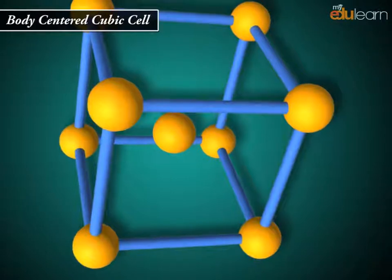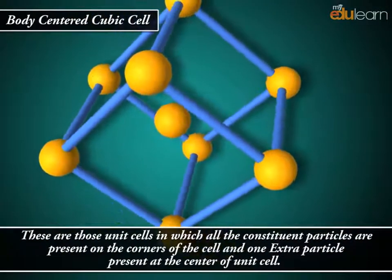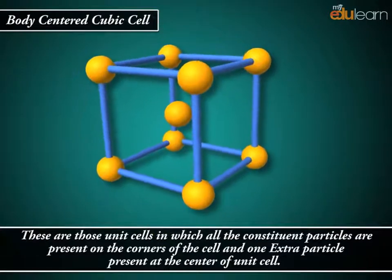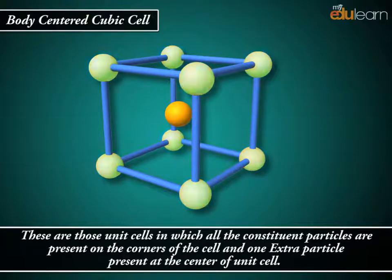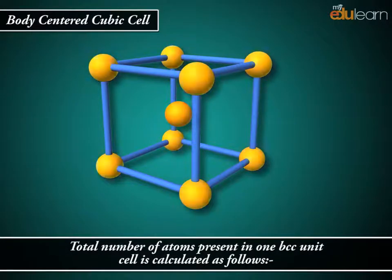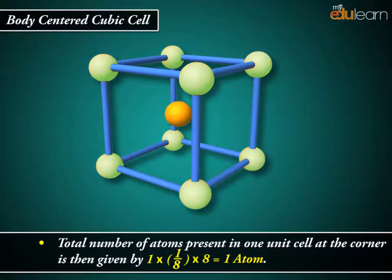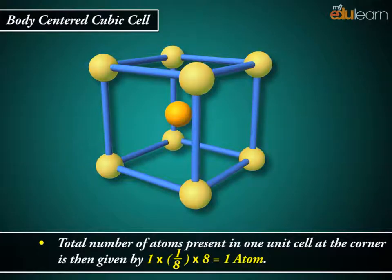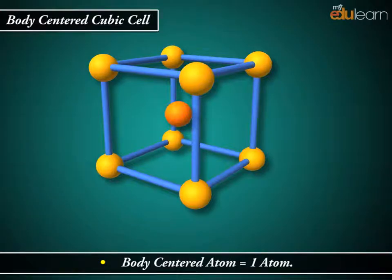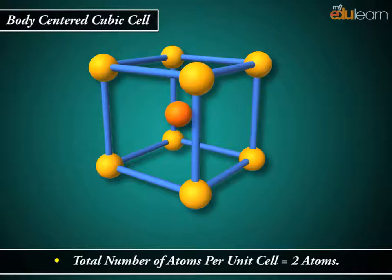Body-Centered Cubic (BCC) Cell: These are unit cells in which all the constituent particles are present on the corners of the cell, and one extra particle is present at the center of the unit cell. The total number of atoms at the corners is 1/8 × 8 = 1 atom, and the body-centered atom contributes 1 atom. Therefore, the total number of atoms per BCC unit cell is equal to 2 atoms.